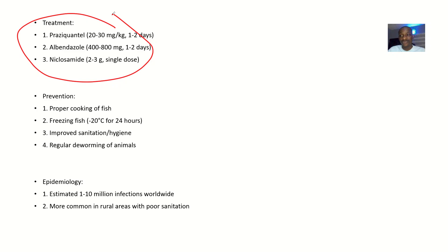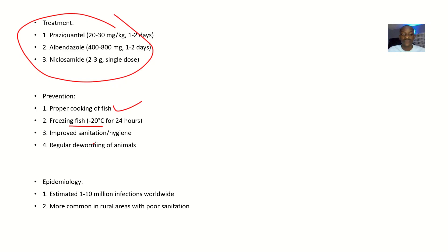Treatment involves drugs like praziquantel, albendazole, and niclosamide. For prevention, make sure you properly cook your fish, pork, and other meats — or you can freeze your meat at minus 20 degrees Celsius for 24 hours before cooking. Improved sanitation and hygiene also help, as does regularly deworming animals.